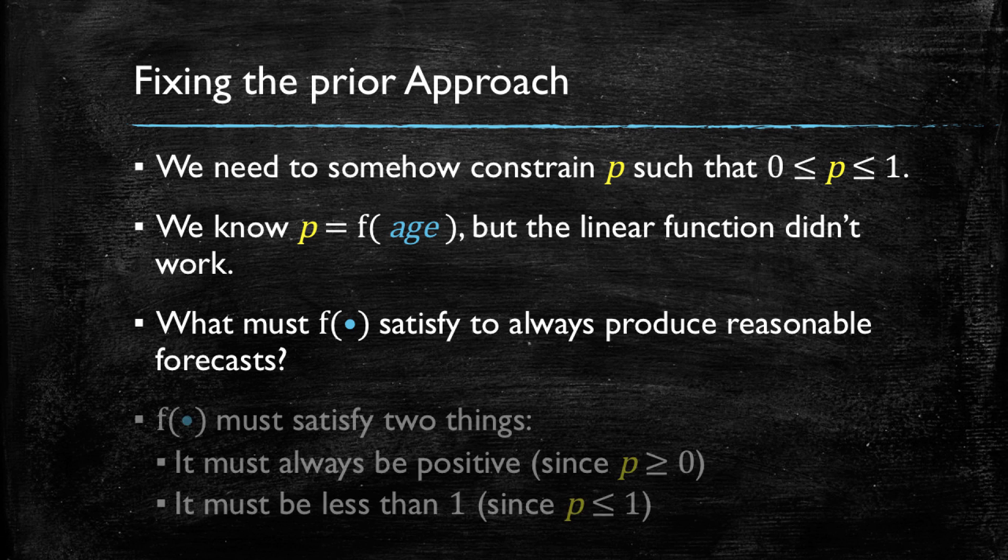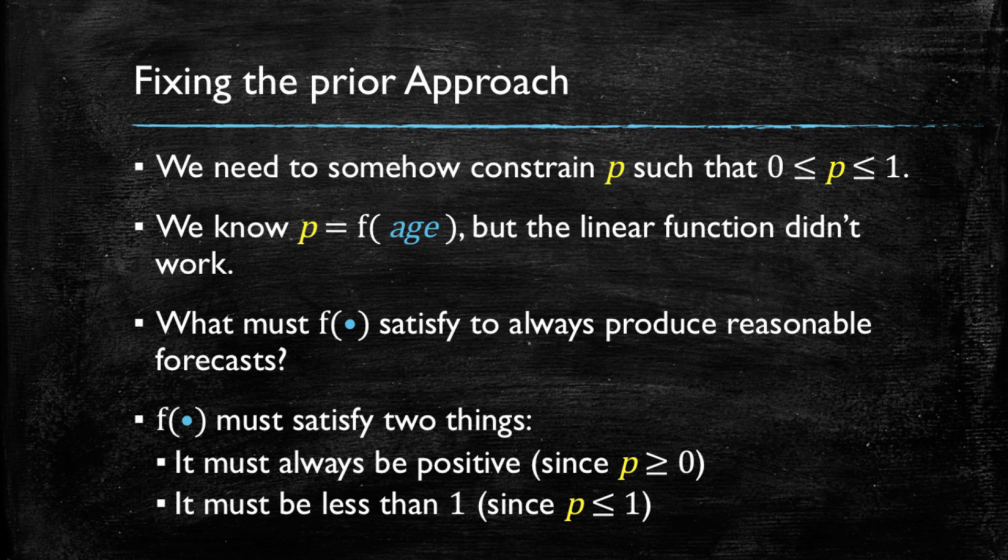Well, there are two main attributes that must be satisfied. One is that the probability must always be positive, and second, that it must be less than 1. So let's now try to develop a new function that satisfies these two criteria.